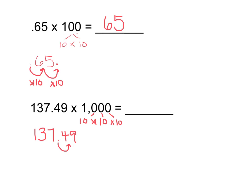Let's take a look at how we're going to do that. We'll move the decimal to the right once, to the right a second time, and to the right a third time. My decimal place ends up here, and I need a placeholder zero at the end to indicate the correct value. My final answer is $137,490, which was spent on all 1,000 tickets if each one cost $137.49.